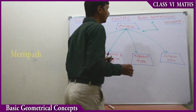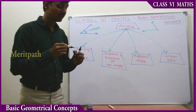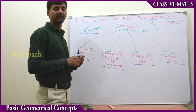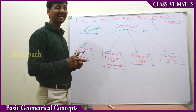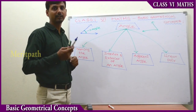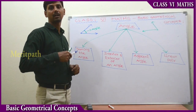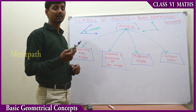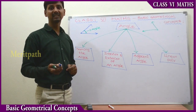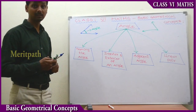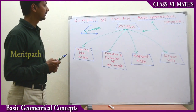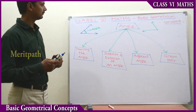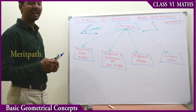We have discussed the types of angles in the previous chapter — acute angle, right angle, straight angle, reflex angle, complete angle. These are the types of angles we have discussed previously.